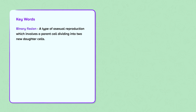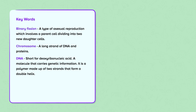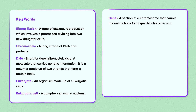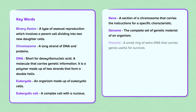Binary fission: a type of asexual reproduction which involves a parent cell dividing into two new daughter cells. Chromosome: a long strand of DNA and proteins. DNA, short for deoxyribonucleic acid: a molecule that carries genetic information; it is a polymer made up of two strands that form a double helix. Eukaryote: an organism made up of eukaryotic cells. Eukaryotic cell: a complex cell with a nucleus. Gene: a section of chromosome that carries the instructions for a specific characteristic. Genome: the complete set of genetic material of an organism. Plasmid: a small ring of extra DNA that carries genes useful for survival.